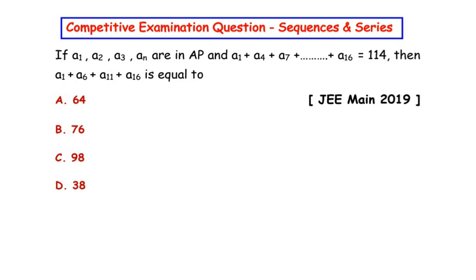then a1 plus a6 plus a11 plus a16 is equal to what? We can see there are four options given. The question says that the terms a1,